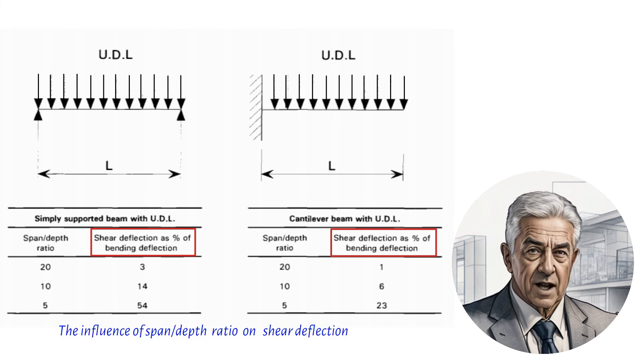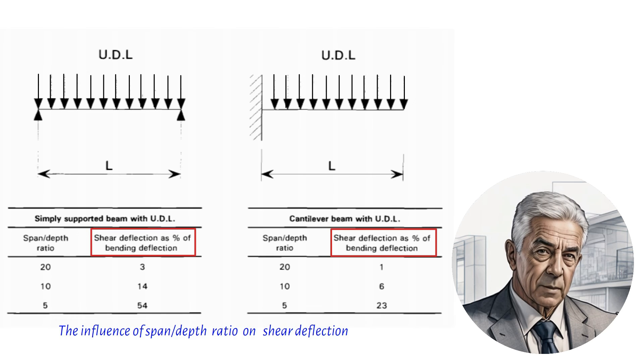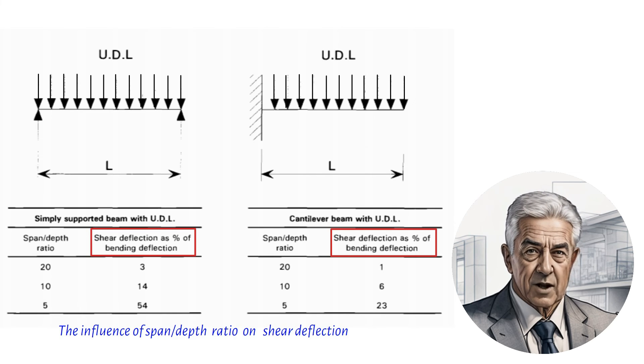The contribution of shear deflection to the total deflection becomes important only in the case of stocky members and it is inversely proportional to the square of the span-depth ratio.